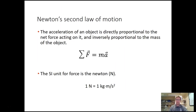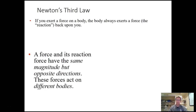Newton's Second Law tells us that the acceleration of an object is directly proportional to the net force acting on it, and inversely proportional to the mass of the object. This gives us a beautiful and powerful equation: net force equals mass times acceleration (F = ma). This equation is used all through physics and engineering. The SI units for force are newtons — 1 newton equals 1 kilogram multiplied by 1 meter per second squared. If you ever forget F = ma, just think about the units.